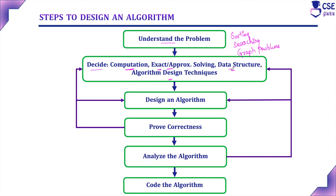Next is data structure. Data structure is the way of storing and organizing data efficiently in memory for easy retrieval. Handling data during program execution is the most important part of problem solving. We need to decide what type of data structure is suitable for a particular problem. The general logic is: algorithm plus data structure equals program. We need to decide an efficient data structure for the given problem, which will improve algorithm efficiency.